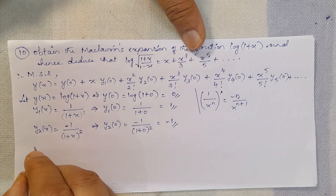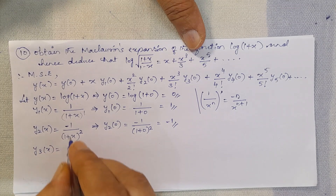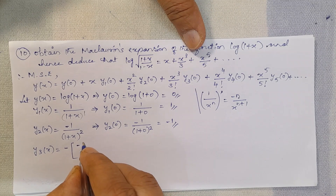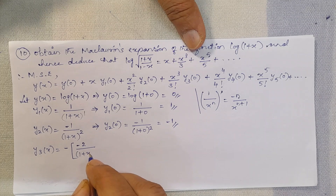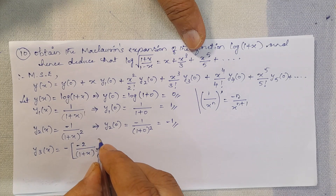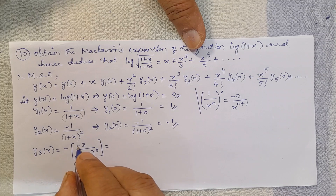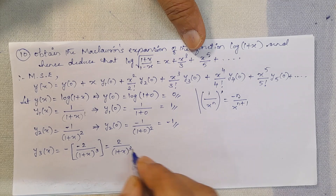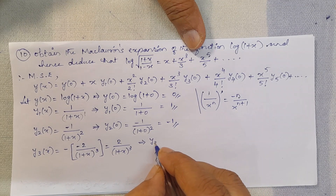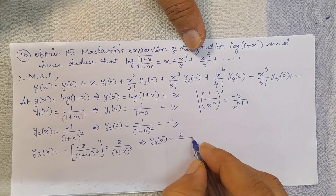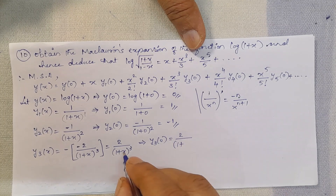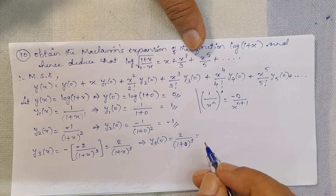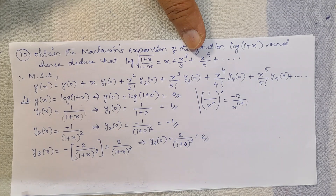Next, find y3(0). y3(x) is the differentiation of y2(x). Differentiating -1/(1+x)² with n = 2 gives minus(-2)/(1+x)³ = +2/(1+x)³. So y3(0) = 2/(1 + 0)³ = 2/1 = 2.